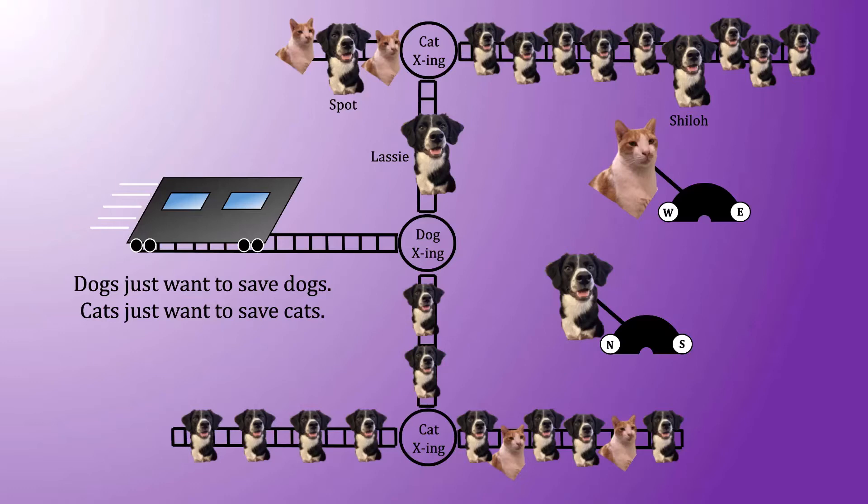In terms of what the cat can observe, she sees the removal of the particular dog, whether it was Spot, Lassie, or Shiloh. But she cannot observe the dog's track choice when she chooses between west and east.